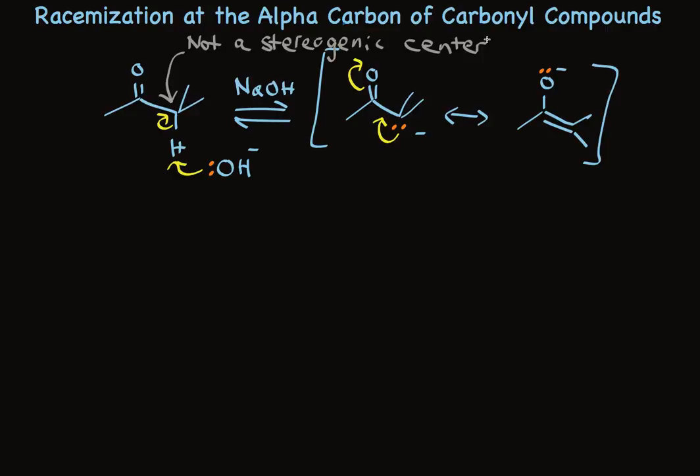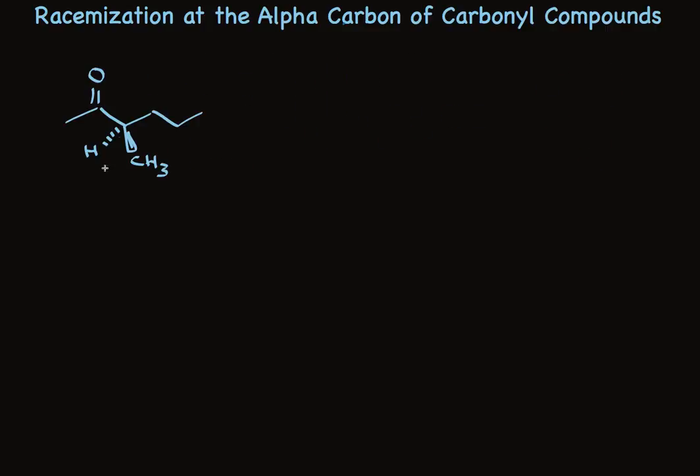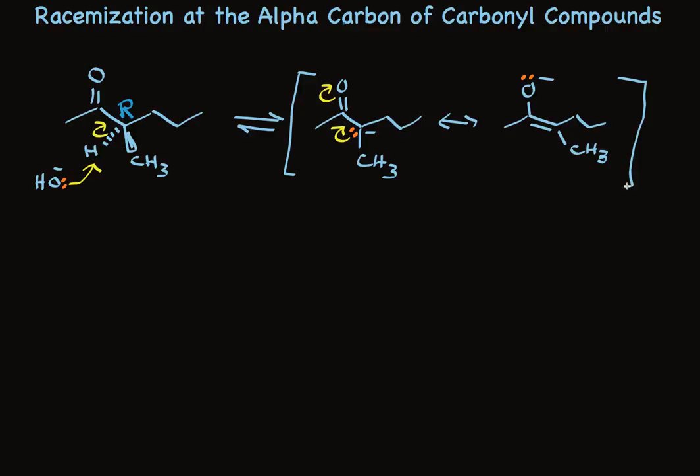What changes when it is a stereogenic center? Take a look. I've written just one stereoisomer here. This happens to be the R configuration, and the alpha hydrogen is removed when it's treated with base. This is stabilized by resonance, which we can picture with arrow pushing. Put these resonance structures in brackets to remind us we don't have either really. We have something that's a hybrid. The one on the right helps us point out that this is an achiral molecule. This is not chiral.